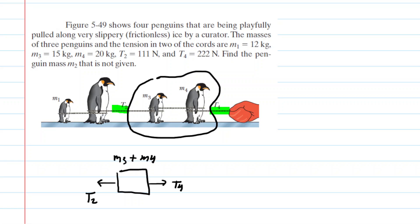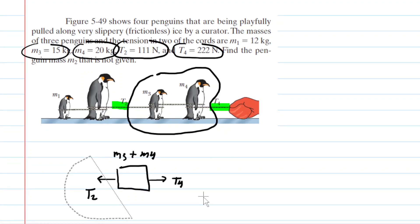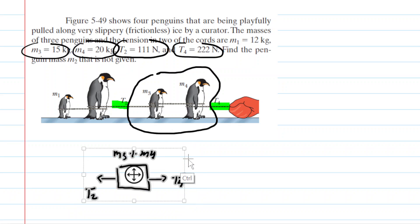So this is nice because we know the values of T4 as well as T2. And then, of course, we also know the values of m3 as well as m4. So we're going to set up a Newton's second law for this system, plug in the known values, and then we're going to be able to solve for the unknown mass m2.